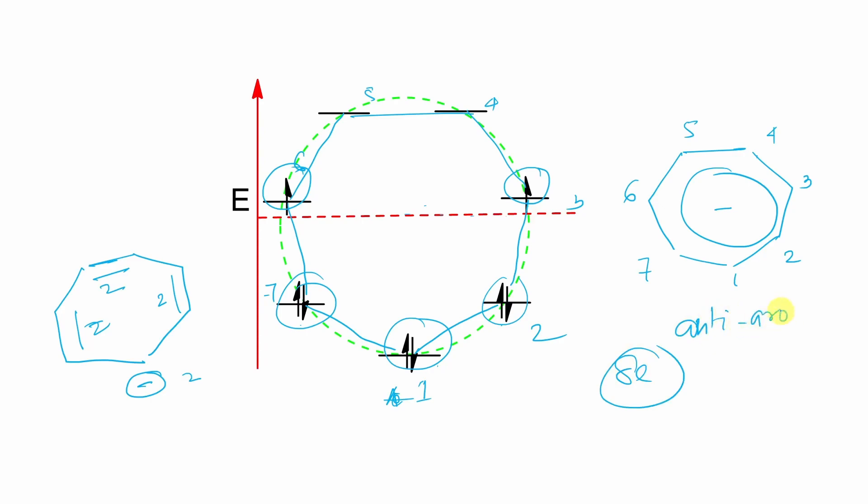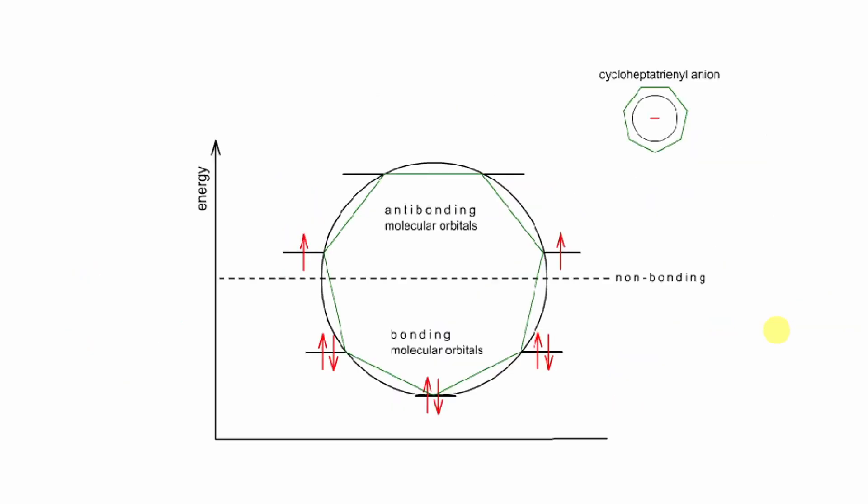It doesn't matter, because in my question, I haven't asked. I have asked just the Frost diagram. And proof of the statement, look at here. In this case, 6 electrons are there in this bonding molecular orbital, BMO.